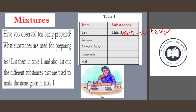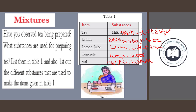Ladoo is made from basin, sugar, and oil. Lemon juice is made from lemon, water, and sugar. Concrete is made from cement and water. Soil contains soil, water, and nutrients.